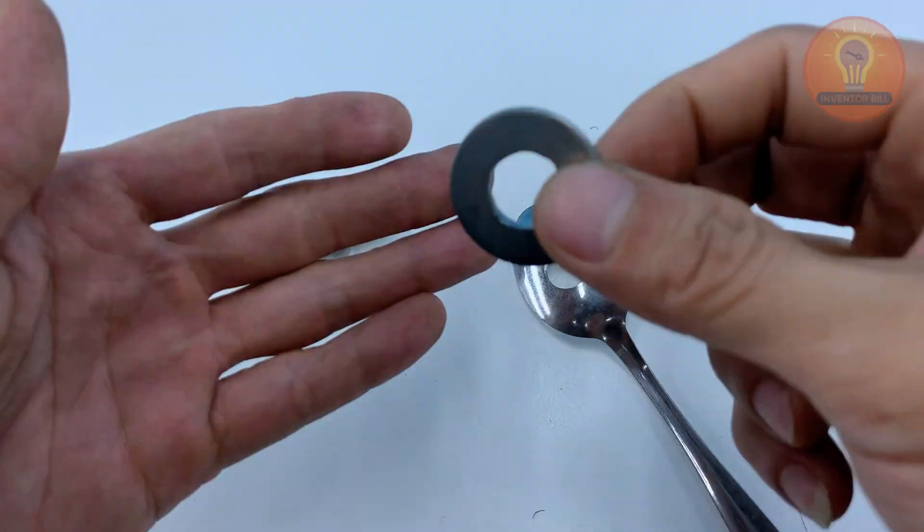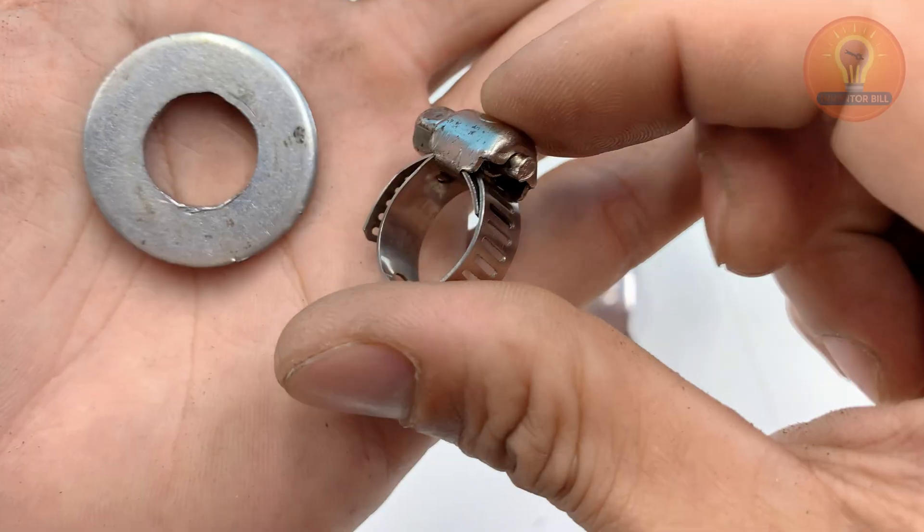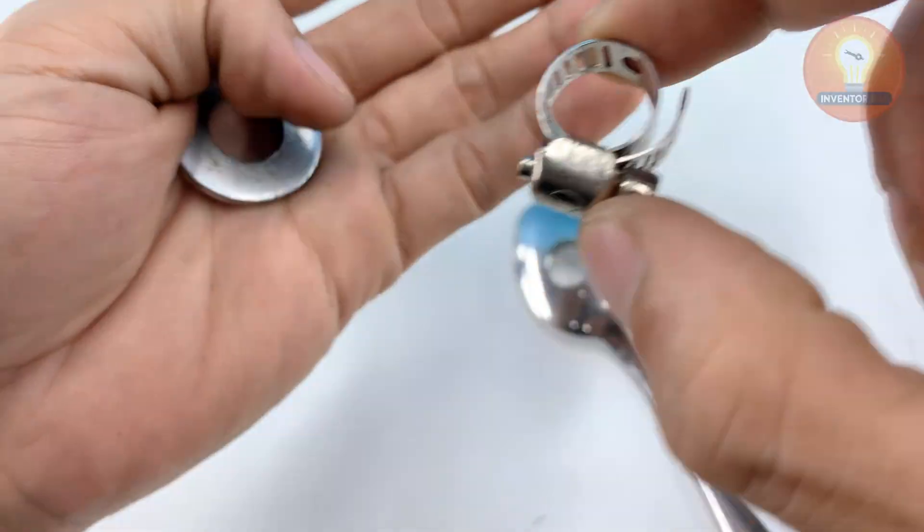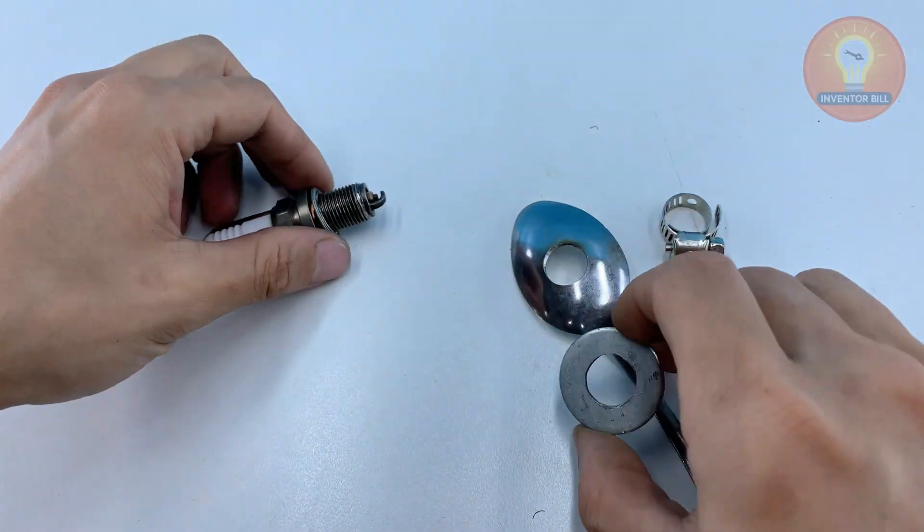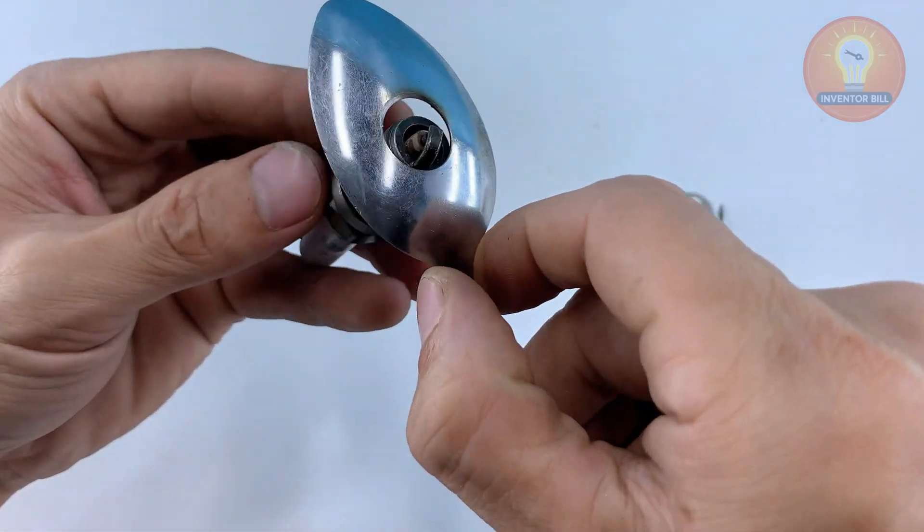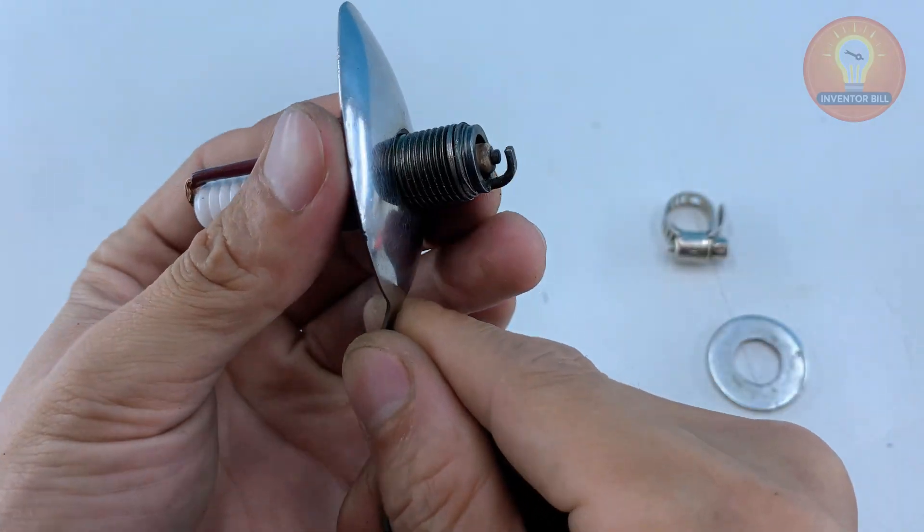When everything is ready, bring the spoon back into the vise and slide the spark plug body into the hole you drilled earlier. It should sit snug and straight. Tighten the spoon and the vise so the plug won't shift.